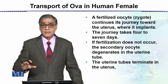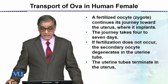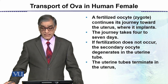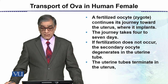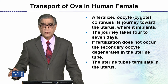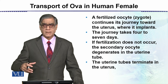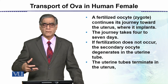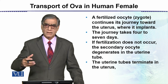If fertilization does not occur, the secondary oocyte degenerates in the uterine tube — uterine tube کی اندر ہی یا پھر uterus کی اندر ہی وہ disintegrate ہو جاتا ہے، یا پھر it comes out.